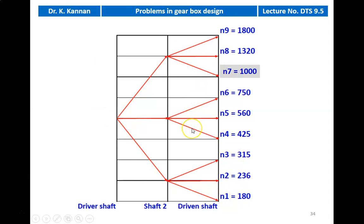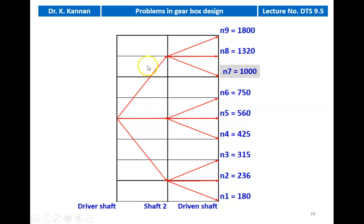The structural diagram gives information about the number of gears on each shaft, the various speeds, and the structural equation. The structural formula selected is 3×3. The driver shaft is the input shaft of the gearbox, the driven shaft is the output shaft, and we have an intermediate shaft 2. For every single speed in the driver shaft, there are 3 output speeds on shaft 2: 1320, 560, and 236. From shaft 2, for every input speed, there will be 3 output speeds on the driven shaft, giving all 9 speeds.